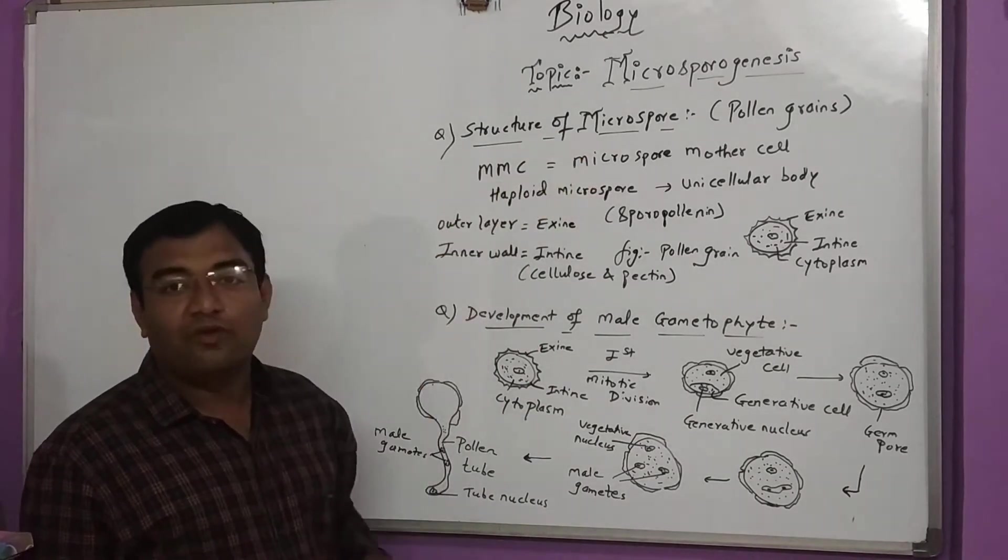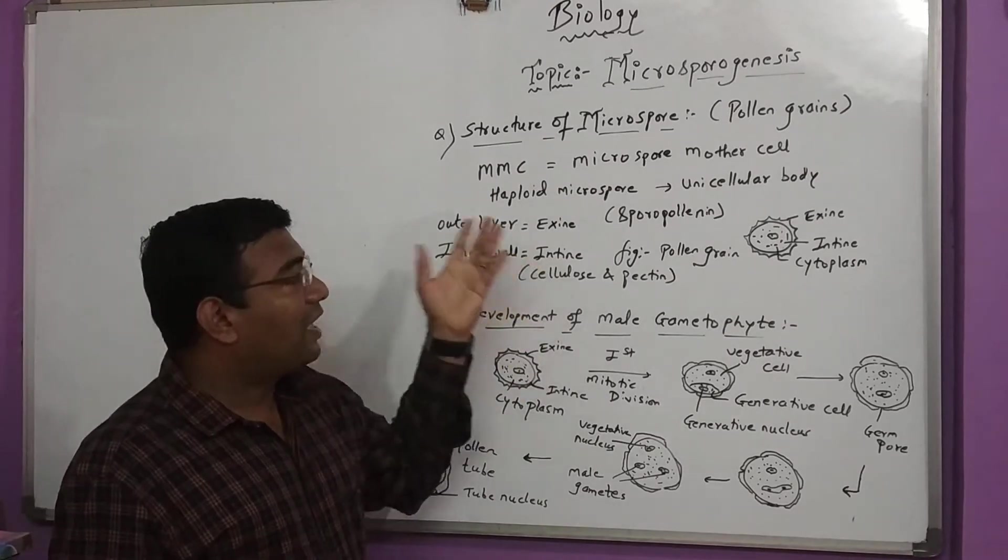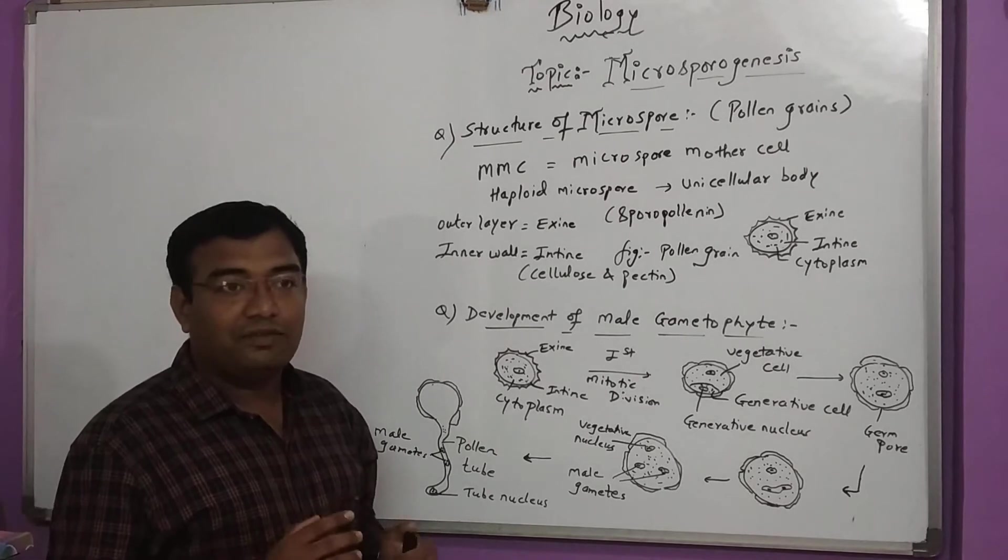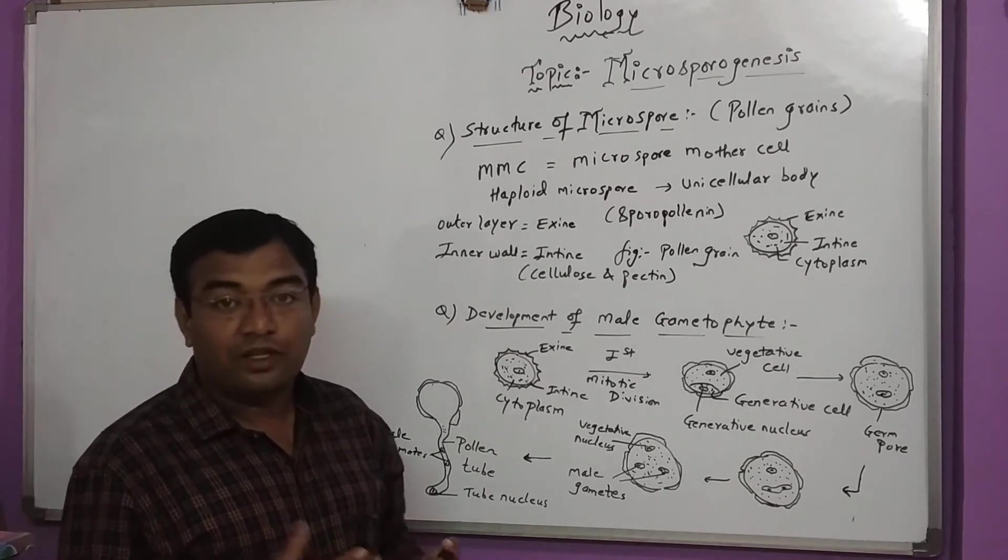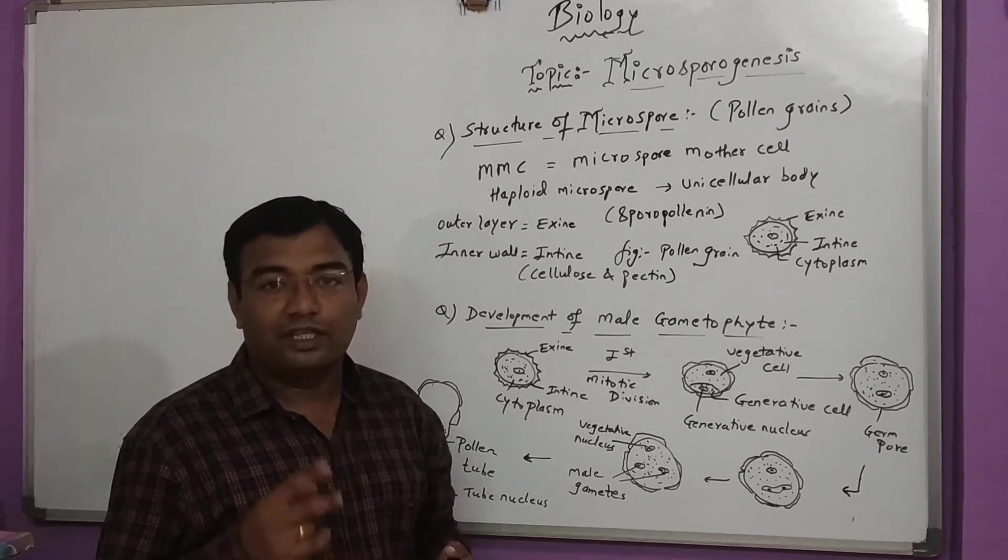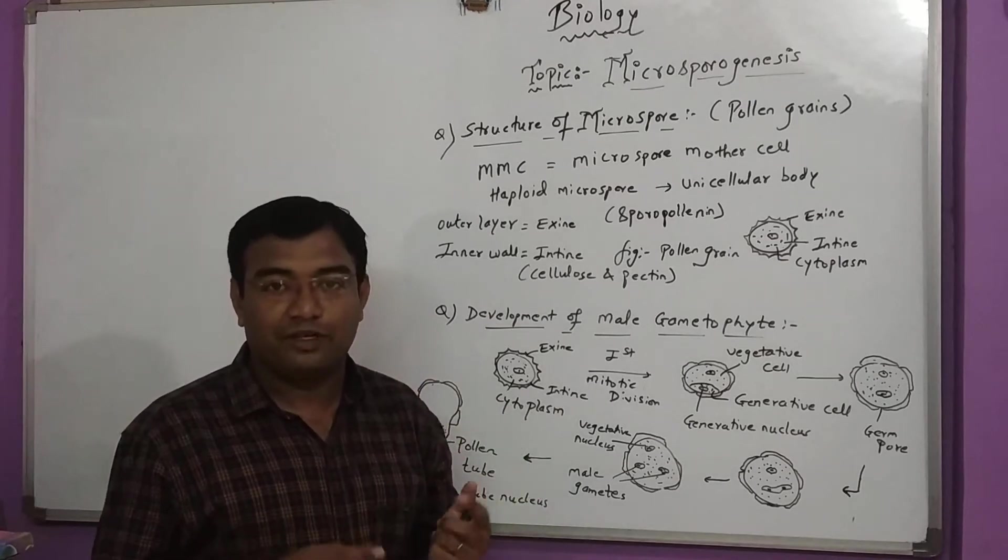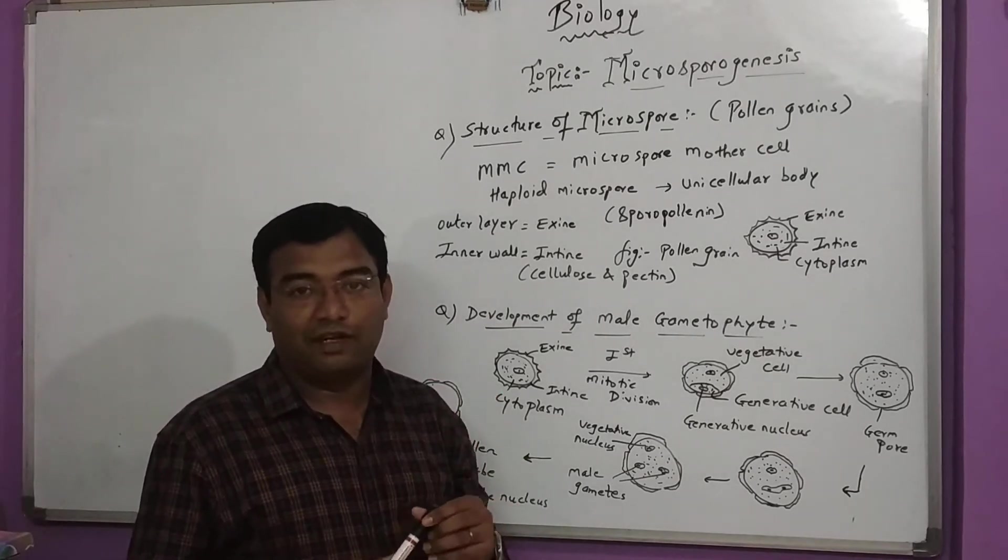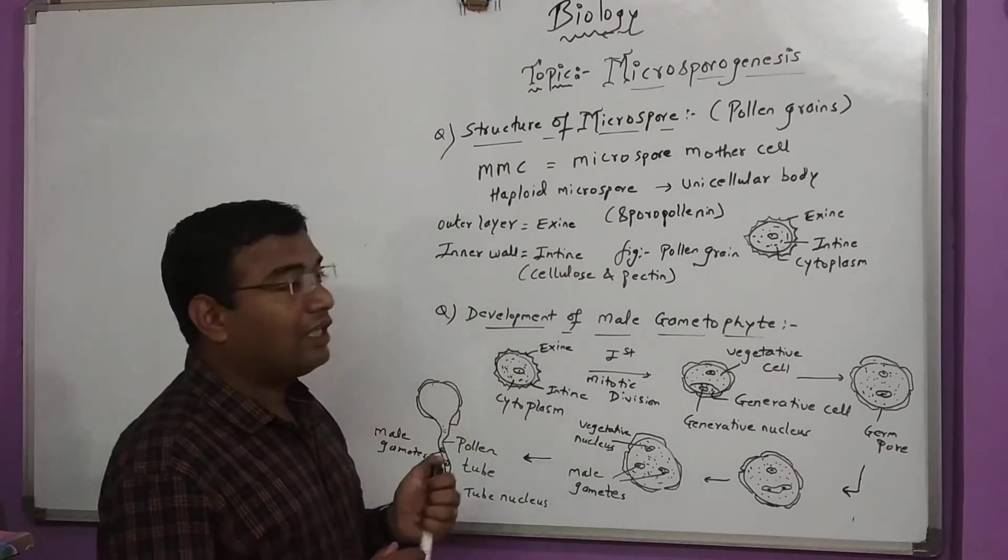Structure of microspore. What is microspore? Microspore is nothing but a male gametophyte form. When we study the reproductive system in flowers, there are two parts: one male part and one female part.